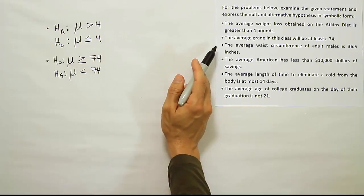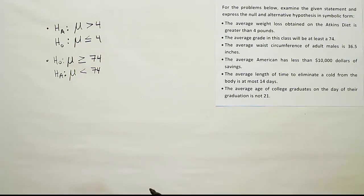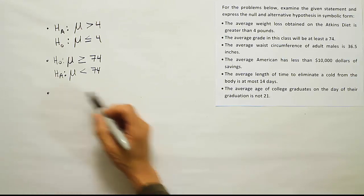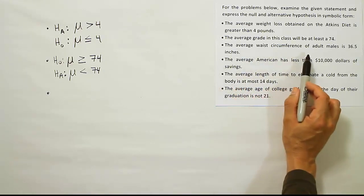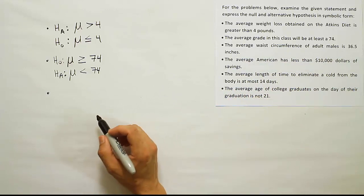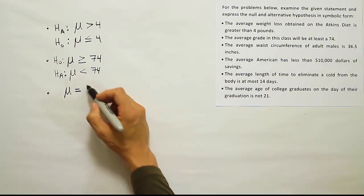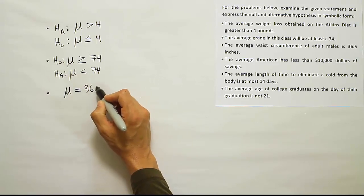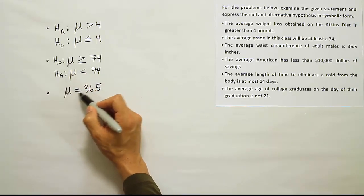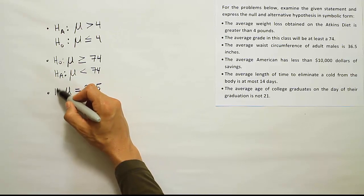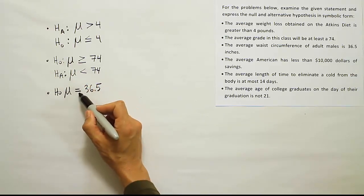Our next bullet: The average waist circumference of adult males is 36.5 inches. So again, this is a claim about the average. The average waist circumference of males is 36.5. The average is - is - is an equal sign, 36.5. Anything that has an equal sign in it is going to be H₀ because it has an equal sign. Any one of these that has an equal is paired up with H₀.